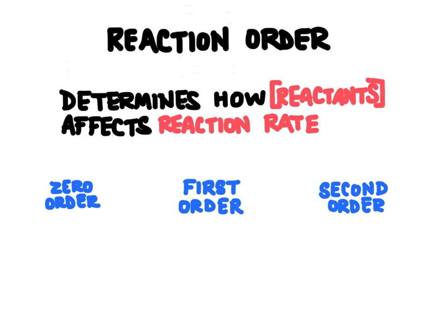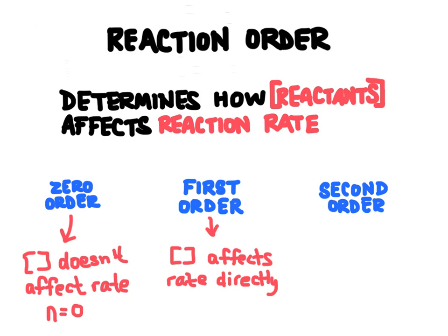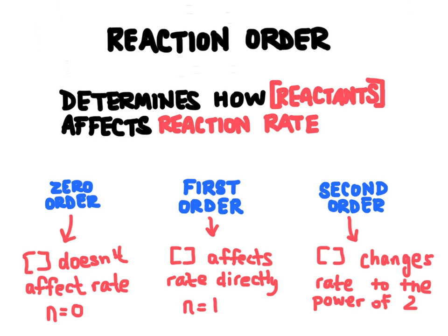The reaction order determines how a reactant's concentration is going to affect the reaction rate. We're going to look at three different orders: zero order, first order, and second order. With zero order, the concentration of the reactant will not affect the rate — N equals 0. With first order, the concentration affects the rate directly — N equals 1 — so if the concentration is doubled, the rate will also double. With second order, the concentration changes the rate to the power of 2 — N equals 2.